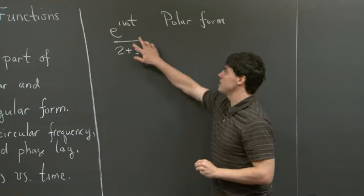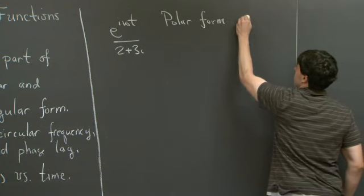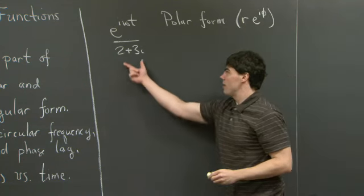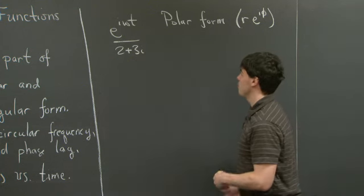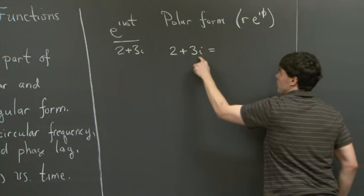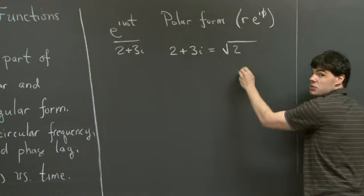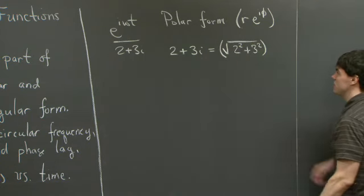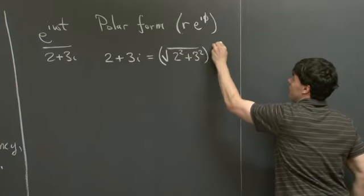Looking at this function, we see that the numerator is already written in polar form — recall that polar form is of the form r e to the i theta. Meanwhile, the denominator is written in Cartesian or rectangular form, so we need to convert it. We can write 2 plus 3i and combine these into a modulus, which is the square root of 2 squared plus 3 squared.